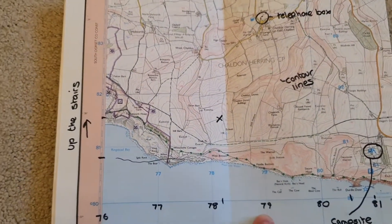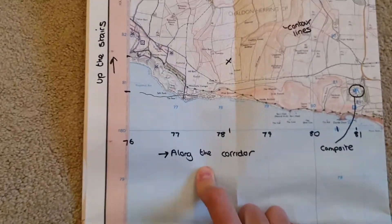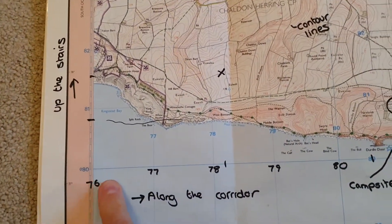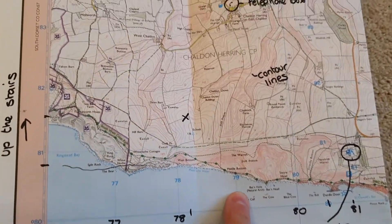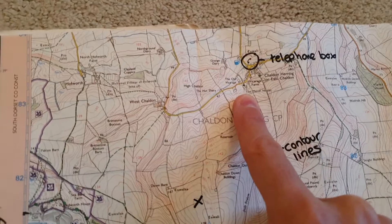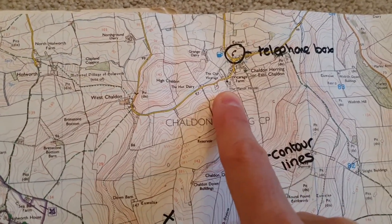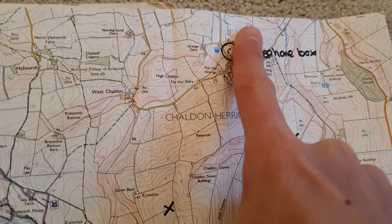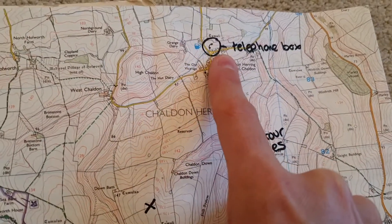You can check the answer by using something called 'along the corridor, up the stairs.' So if we go along the corridor to 79 and up the stairs to 83, we can do that again — along the corridor, up the stairs — and this is the correct box because there's the telephone box.